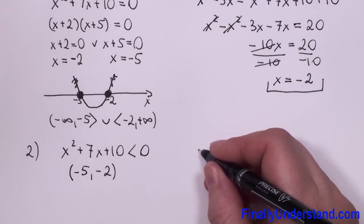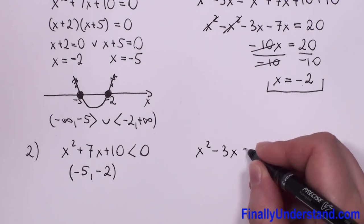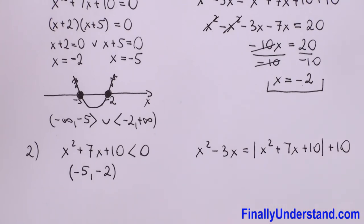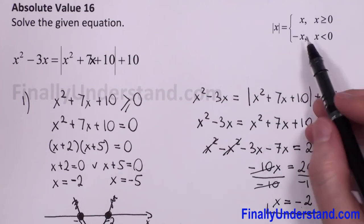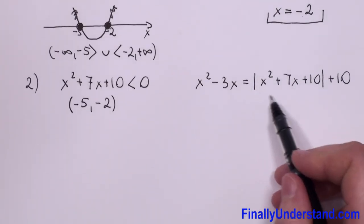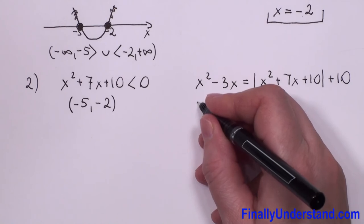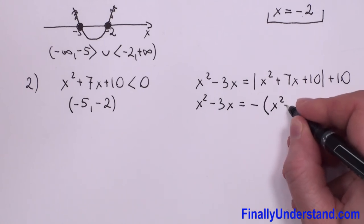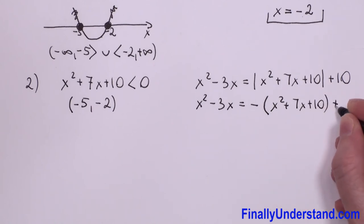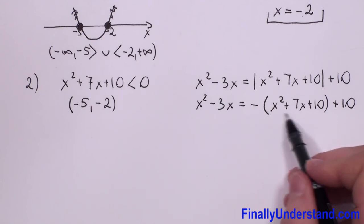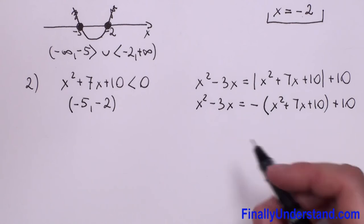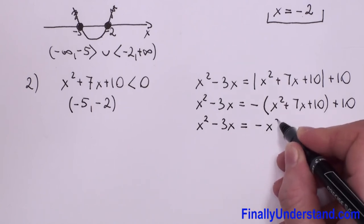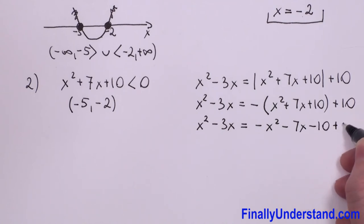Copying our equation: x squared minus 3x equals the absolute value of (x squared plus 7x plus 10) plus 10. When we get rid of the absolute value bars in Case 2, we put a negative sign before the whole expression. So we have x squared minus 3x equals negative (x squared plus 7x plus 10) plus 10. Distributing the negative sign: x squared minus 3x equals negative x squared minus 7x minus 10 plus 10.